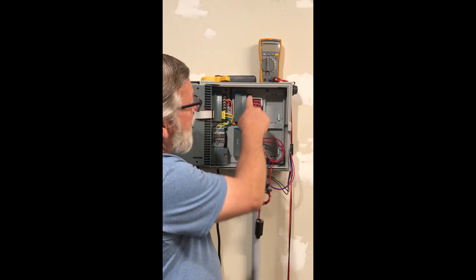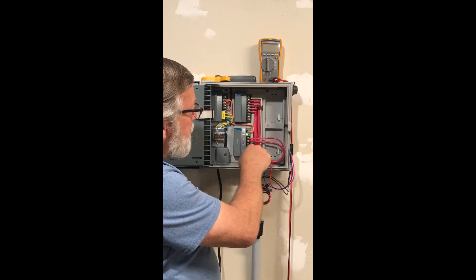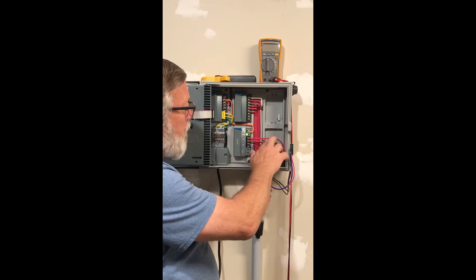This one happens to be a hybrid. It has the first eight stations going out to the field as 24 volts and then stations 9 through 54 are on the two-wire path.